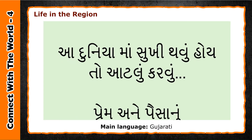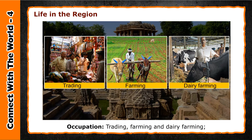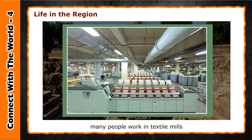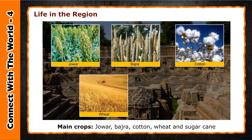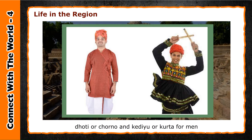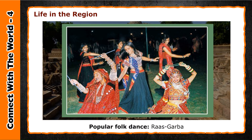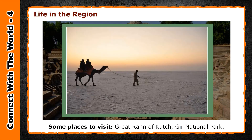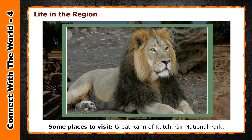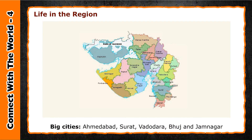Life in the region — State: Gujarat. Capital: Gandhinagar. Main language: Gujarati. Occupations: trading, farming, and dairy farming. Many people work in textile mills. Main crops: jowar, bajra, cotton, wheat, and sugarcane. Traditional dress: sarees and chaniya choli for women; dhoti or chorno and kedi or kurta for men. Major attraction: Kite Festival or Uttarayan. Popular folk dance: Ras Garba. Some places to visit: Great Rann of Kutch, Gir National Park, Sabarmati Ashram, Kankaria Lake, and Rani ki Vav. Big cities: Ahmedabad, Surat, Vadodara, Bhuj, and Jamnagar.